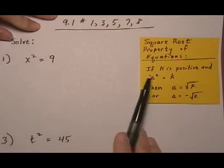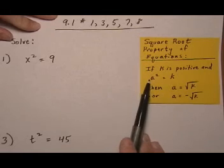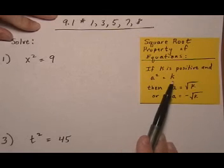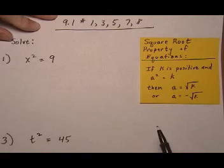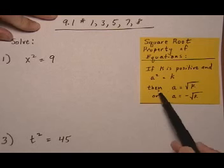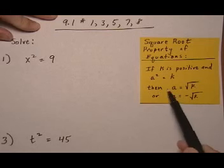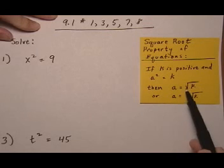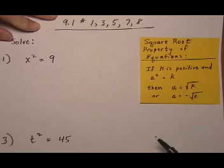And that's a property you can use for a very specific kind of quadratic equation. Over here is the property. If you can get the equation into this format here, something squared equals a number, then you can find the solution using the square root property. By the square root property, that would mean that the something is equal to the root of k or the negative root of k.